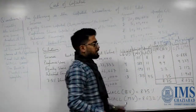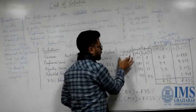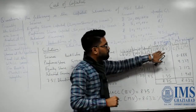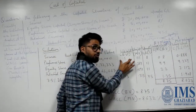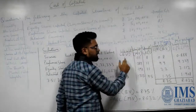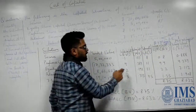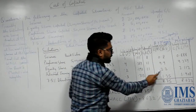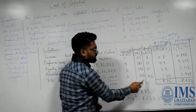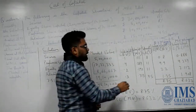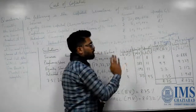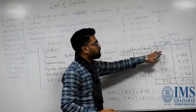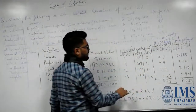Now we calculate the weighted cost of capital by multiplying weight by specific cost. For the book value method: preference shares — 0.1 × 8 = 0.8; equity shares — 0.4 × 11 = 4.4; retained earnings — 0.2 × 11 = 2.2; debentures — 0.3 × 4.5 = 1.35. The total weighted average cost of capital by book value method is 8.75%.